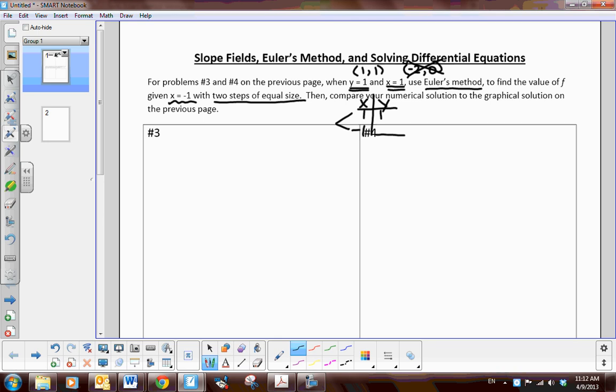Well what do you notice is the change in value there in the x values? Well we notice the difference between one and negative one. We're actually going down two. So if I want to take two steps of equal size, if I divide negative two by two, that means my change in x, we're going to change by negative one unit. So we're going to take two steps. So we'll go down one the first time and then go down one the second time. And then that will give us an estimate of the y value when x is negative one.